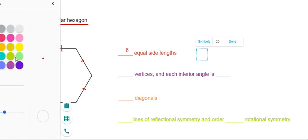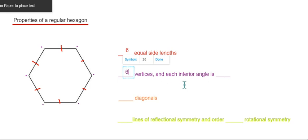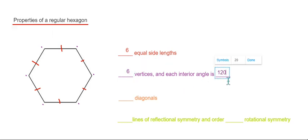Let's have a look at the number of vertices next. We've got one, two, three, four, five, six. And each vertex is of a size 120 degrees.